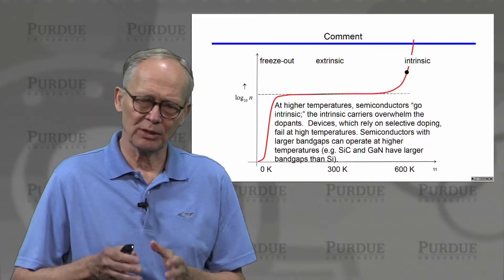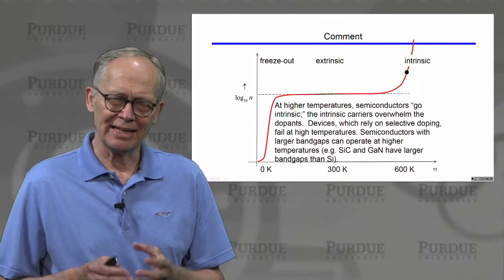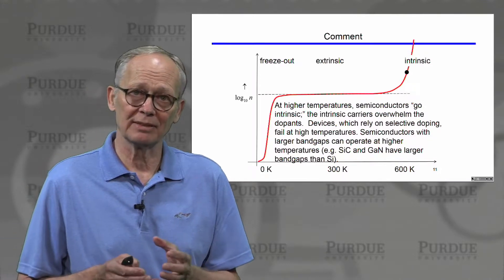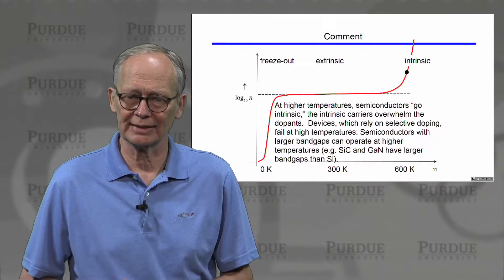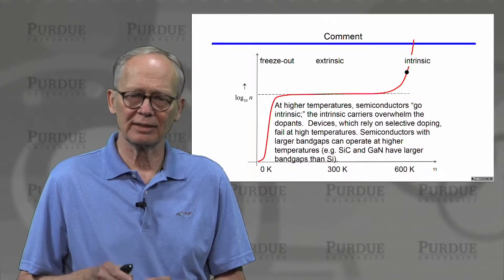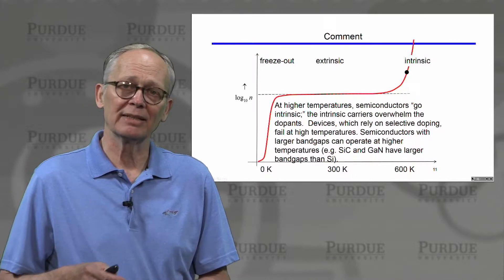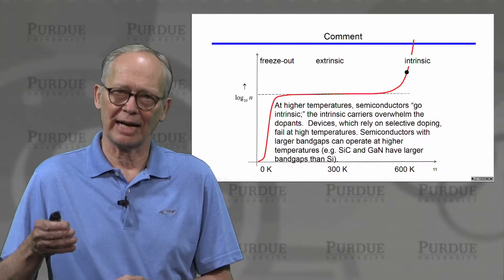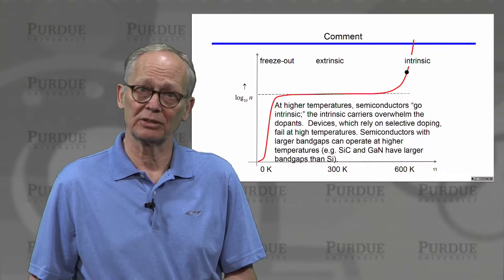As we go to higher temperatures and the semiconductor becomes intrinsic, we lose the effects of doping. Since selective doping in various regions is what we use to create devices, devices tend to fail — this determines the upper operating temperature limit. For devices that need to operate at higher temperatures, we look to semiconductors such as silicon carbide or gallium nitride, which have larger band gaps than silicon, smaller intrinsic carrier concentrations, and these effects occur at higher temperatures.